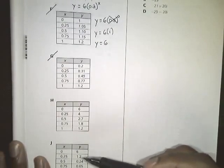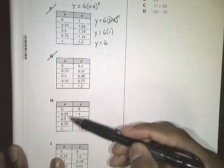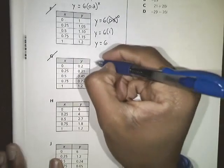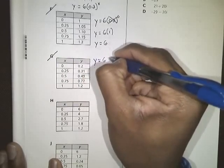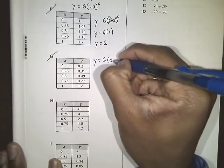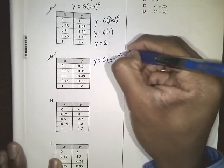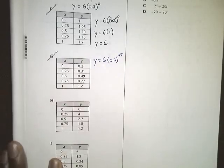Well, in these two answer choices, the next x value that they plugged in was 0.25. So now let's see what happens when we plug in 0.25 into our x. So if we have y equals 6 times 0.2 raised to the 0.25 power, again, you can use your calculator to help you figure out what 0.2 raised to the 0.25 power is.